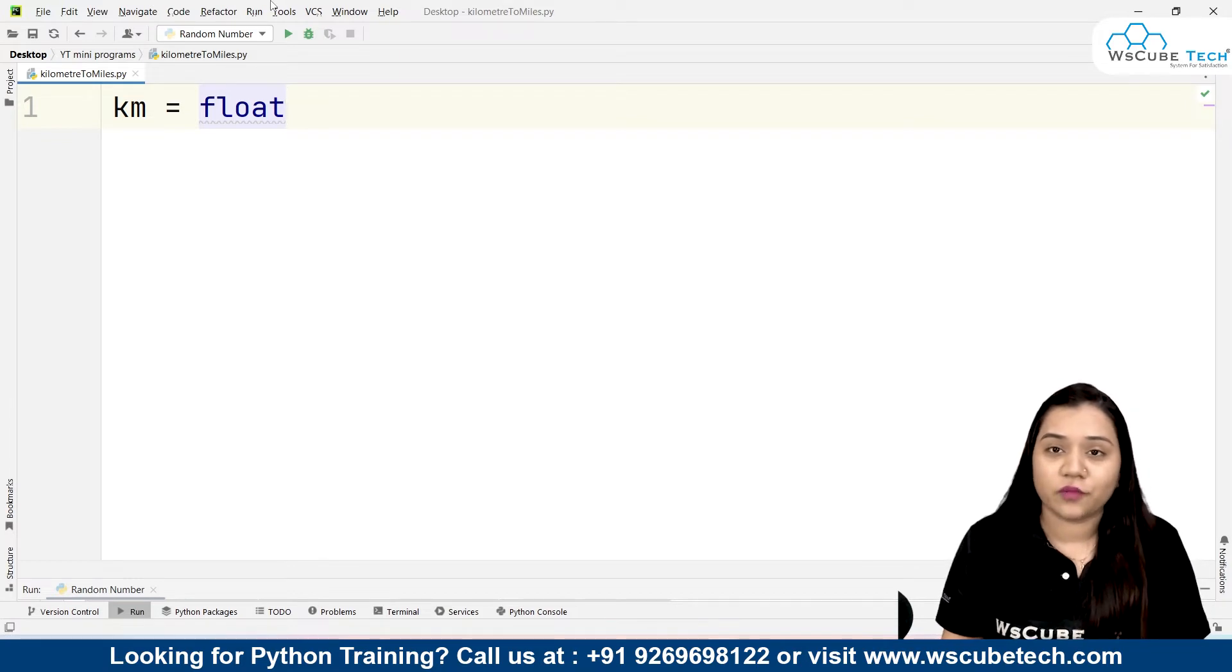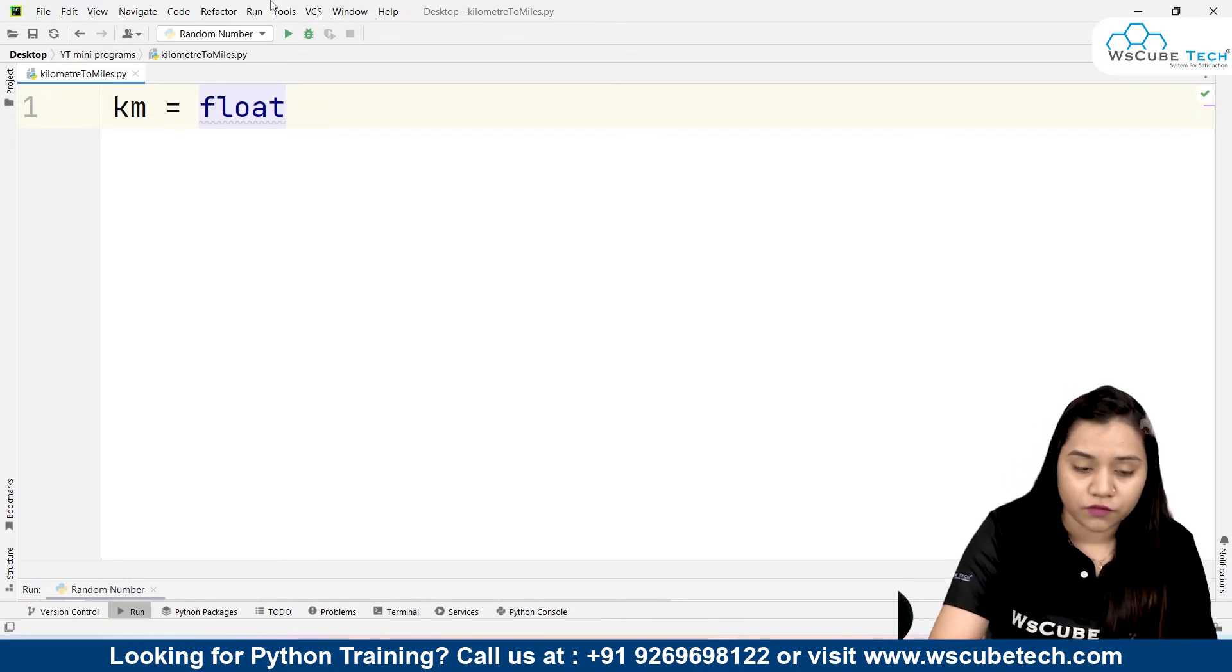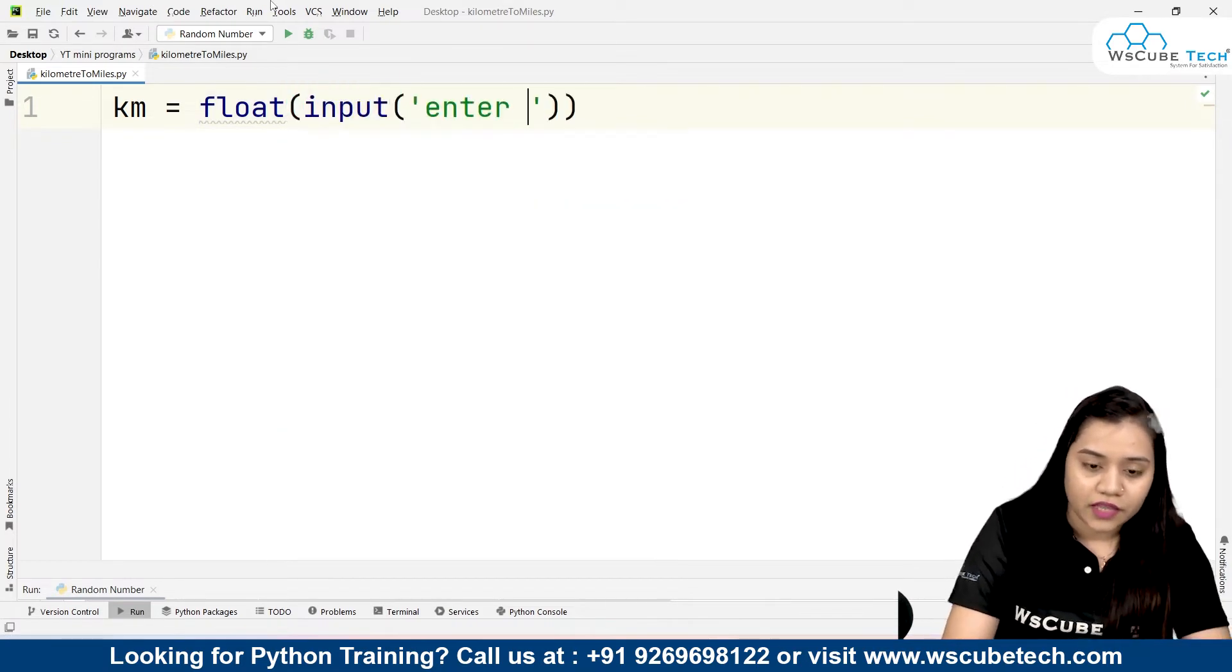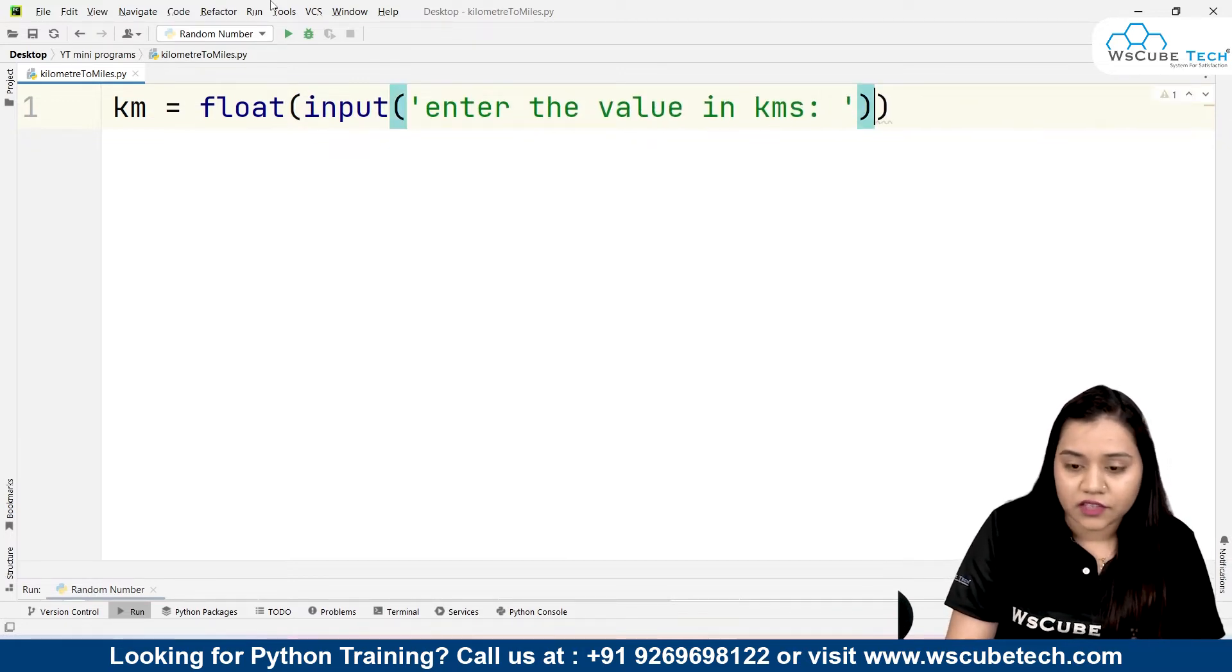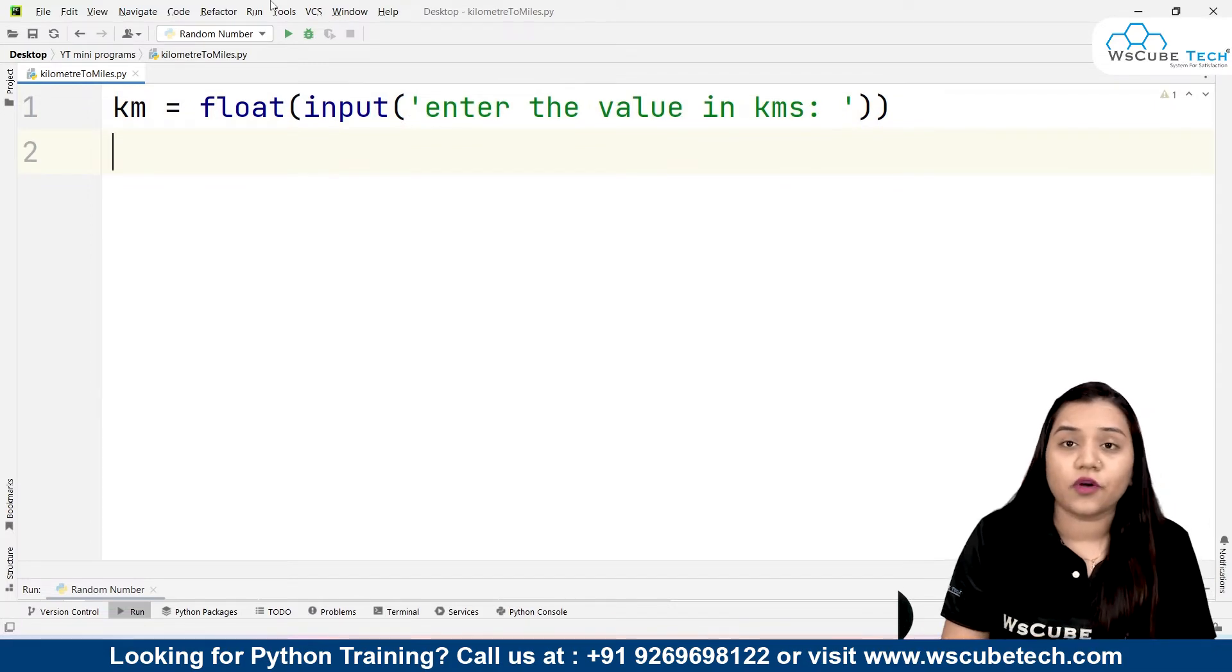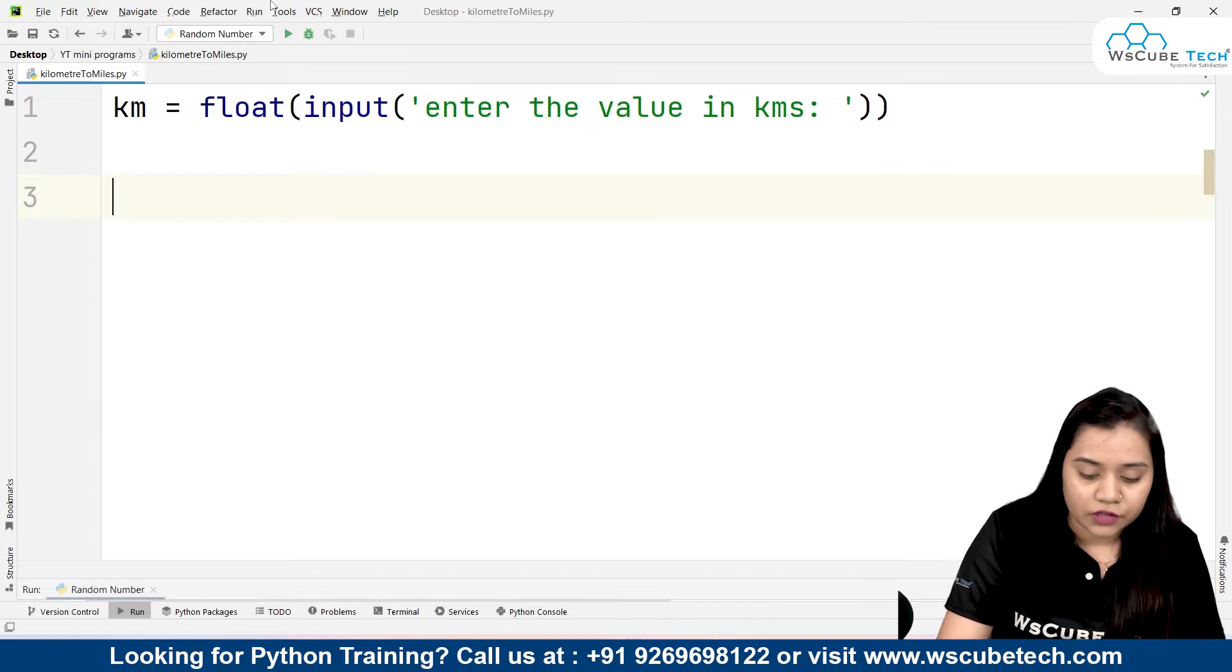I would prefer float because people might say it is 4.5 kilometers or 6.7 kilometers, so we will be using float. Input: enter the value in kilometers. So we are asking the user here. You can take a predefined variable or you can ask the user what input they want to give.